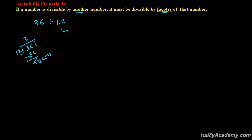This property is then saying something like this: since 36 is divisible by 12, then 36 must also be divisible by the factors of 12.